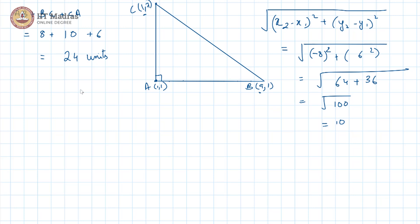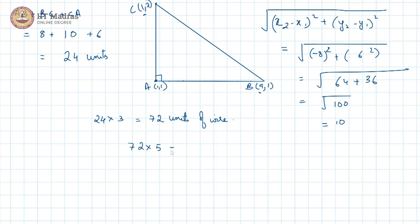We need wiring for fencing around 3 rounds, so we will require 24 into 3, which is 72 units of wire. Each unit has a fixed price of 5 rupees, so we have 72 into 5, which is rupees 360 as the cost of fencing.